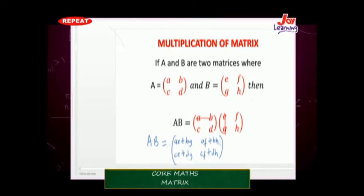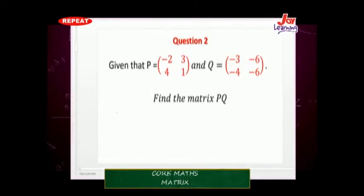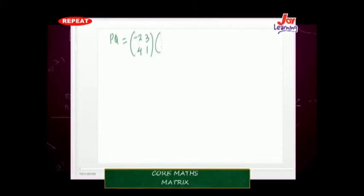Let's work a concrete example. Given that P is the matrix negative 2, 3, 4, and 1, and Q is the matrix negative 3, negative 6, negative 4, and negative 6, find the matrix P times Q. The matrix PQ is the same as multiplying negative 2, 3, 4, 1 by negative 3, negative 6, negative 4, negative 6.